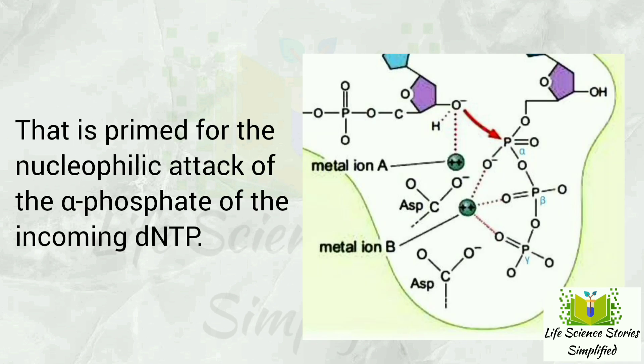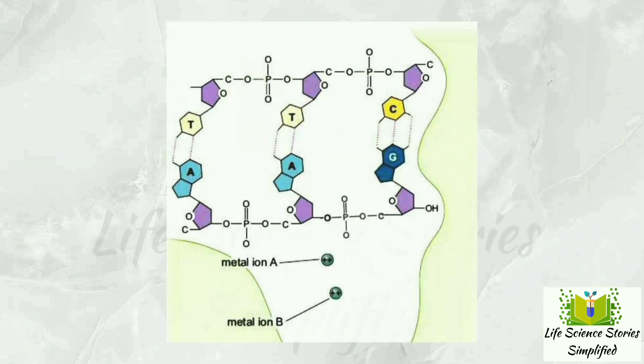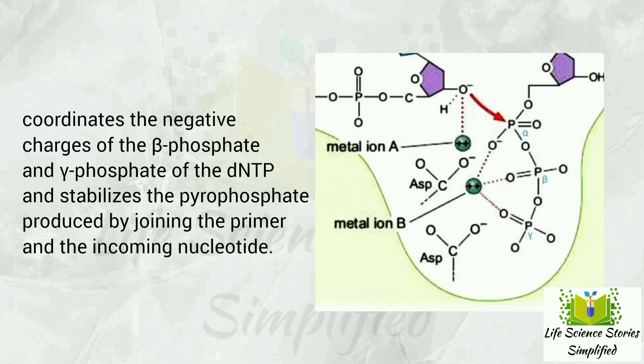This results in the release of pyrophosphate. This reaction is complete when the phosphodiester bond forms. The incoming dNTP has alpha, beta, and gamma phosphate groups. Then the beta-gamma phosphate is released as the negatively charged pyrophosphate.